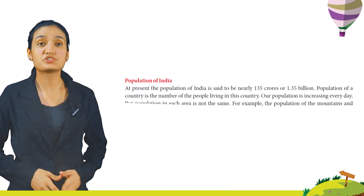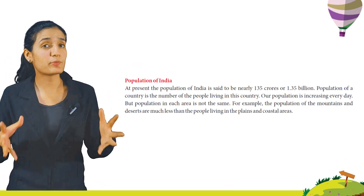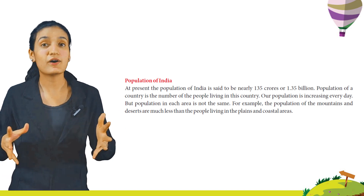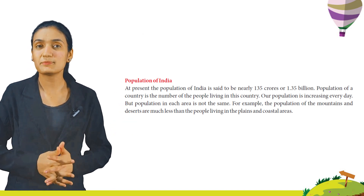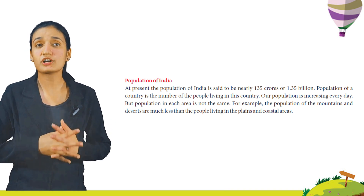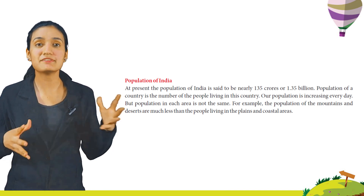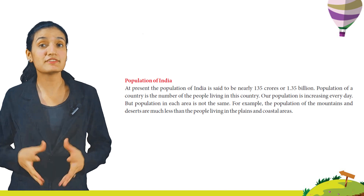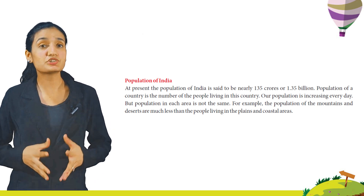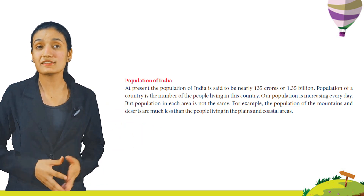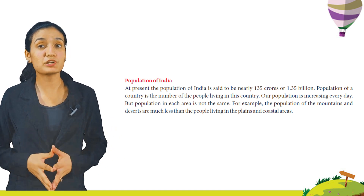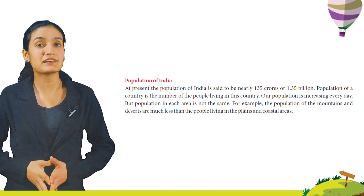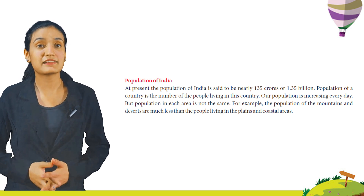Population of India. At present, the population of India is said to be nearly 135 crores, or 1.35 billion. Population of a country is the number of people living in that country. Our population is increasing every day. But population in each area is not the same. For example, the population of the mountains and deserts is much less than the people living in the plains and coastal areas.